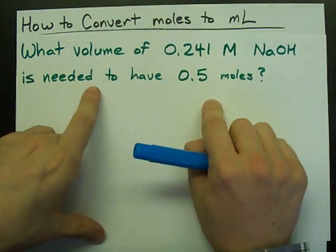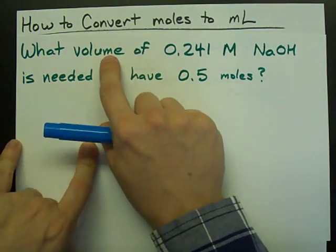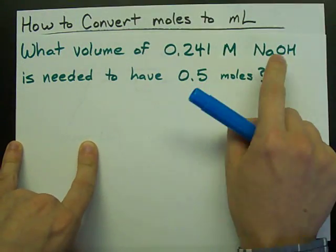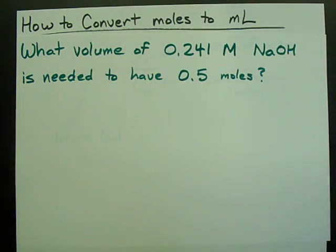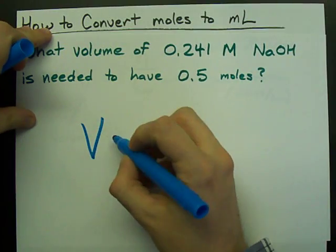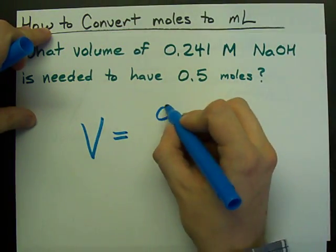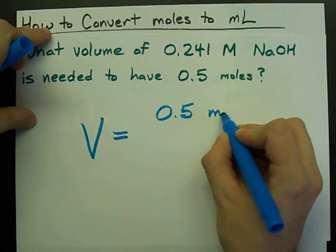In the case of this question where we're looking for the volume needed to have 0.5 moles of NaOH, you can calculate the volume needed by taking the number of moles, 0.5 moles,